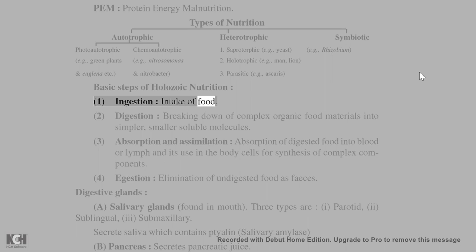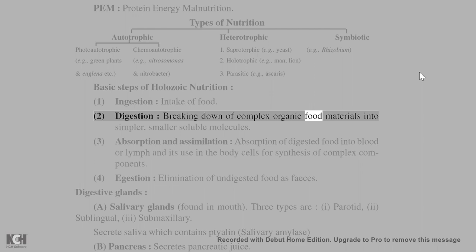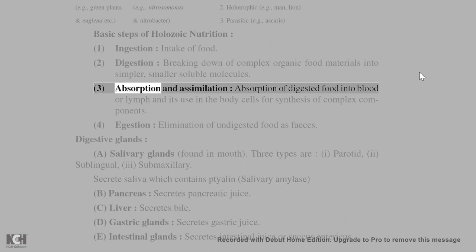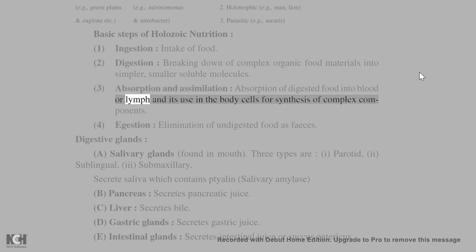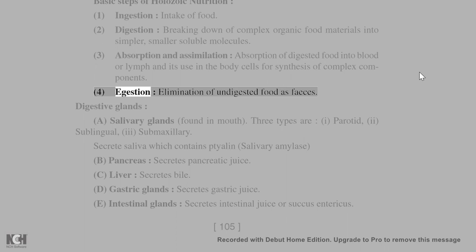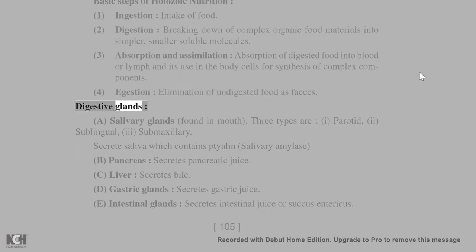Basic steps of holozoic nutrition: 1. Ingestion — intake of food. 2. Digestion — breaking down of complex organic food materials into simpler, smaller soluble molecules. 3. Absorption and assimilation — absorption of digested food into blood or lymph and its use in body cells for synthesis of complex components. 4. Egestion — elimination of undigested food as feces.